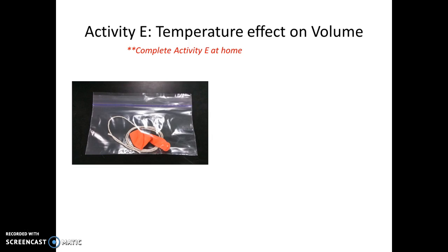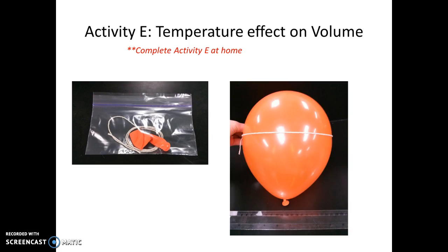Activity E is completed at home. You'll receive a small Ziploc bag containing a balloon and a piece of string. Inflate the balloon, wrap the string around its widest part, make a mark, and measure the circumference with a ruler. Inflate the balloon at room temperature, then place it in your freezer for at least 24 hours. Take it back out and measure its circumference again to see how it changes with temperature. This will be the last piece of data you collect for the experiment. This is the end of the procedure — I hope this video helps you prepare for lab.